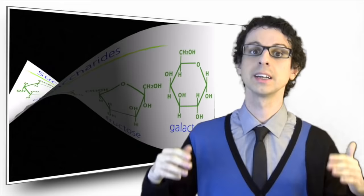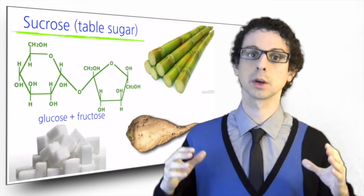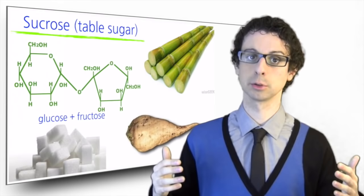Carbohydrates made of two sugar units are called disaccharides, and they are also important in food. When a molecule of glucose combines with a molecule of fructose, we get sucrose.